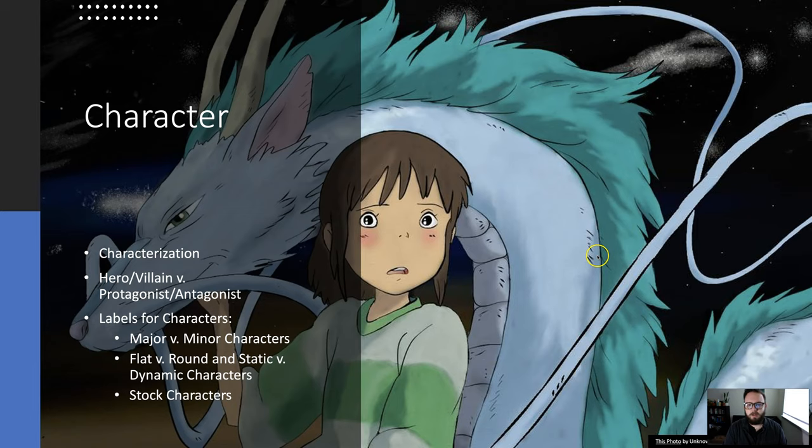Static characters are characters that don't change over the course of a story, and dynamic characters are characters that do change throughout the course of a story. And stock characters are, and we'll talk a little bit more about this in another video, but stock characters are characters that we've seen so many times over and over and over again, as part of that cultural consciousness, that we immediately see them and we know what to expect.